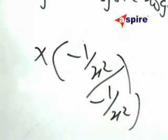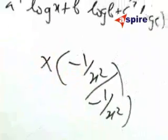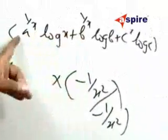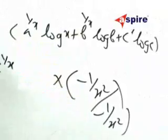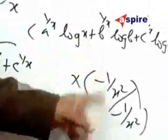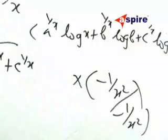Because this is 1 by X differentiation minus 1 by X squared, so I take it outside and this will be cancelled.